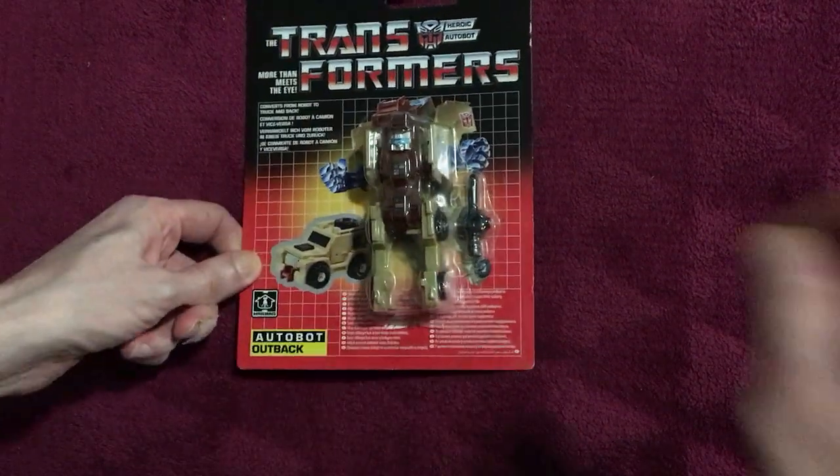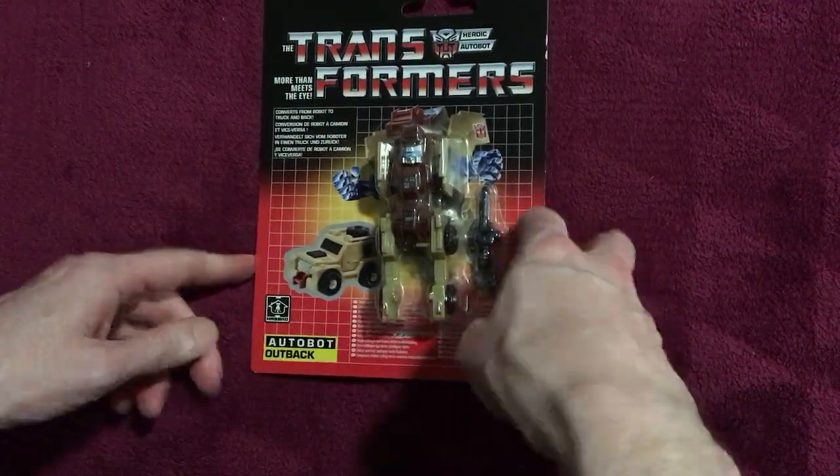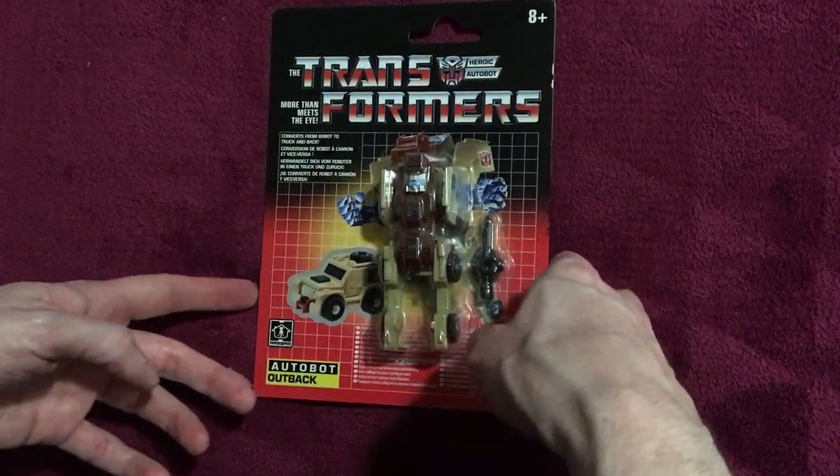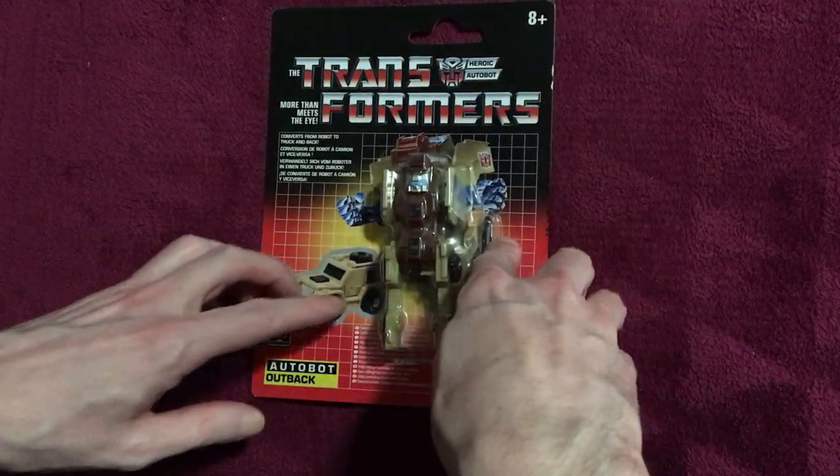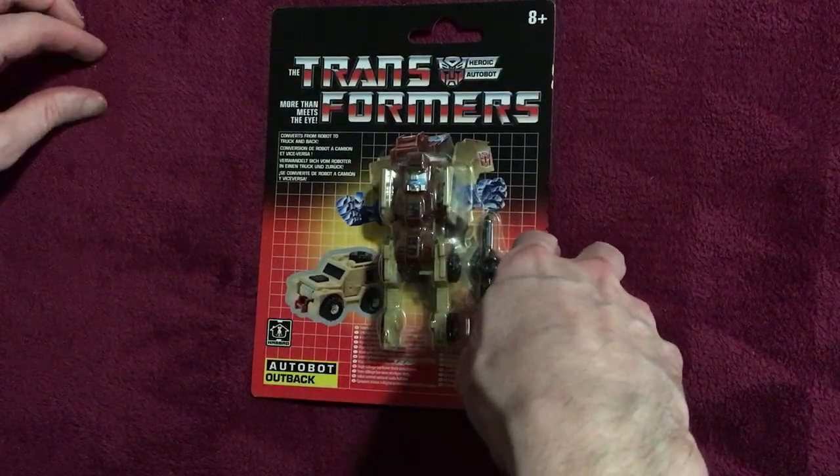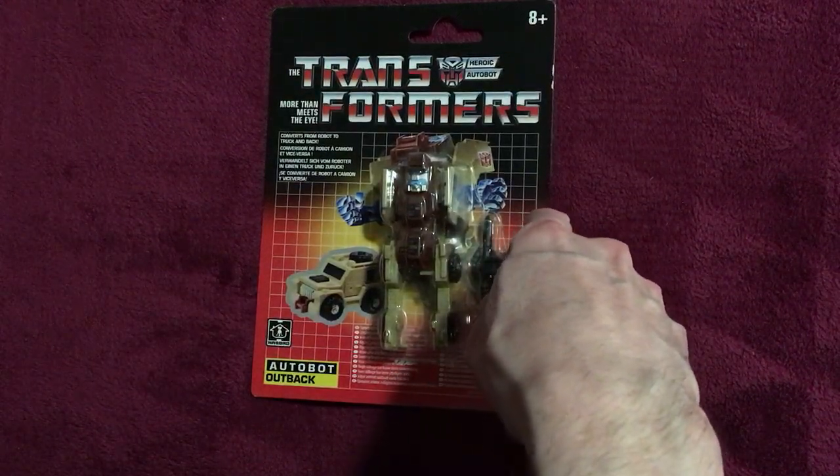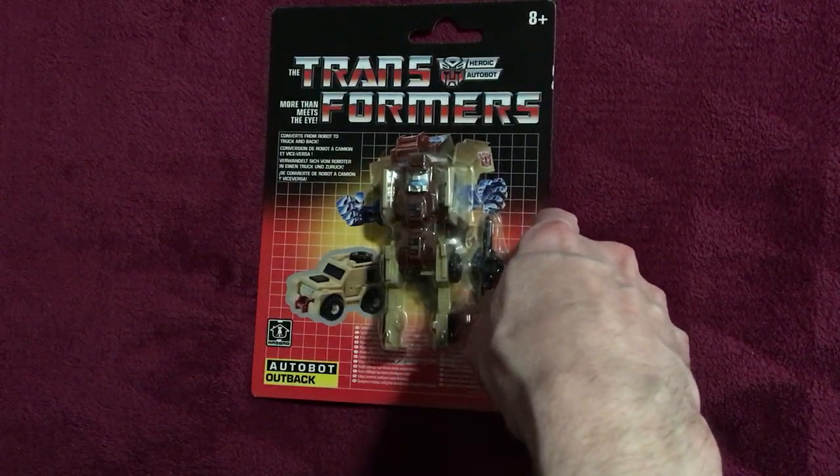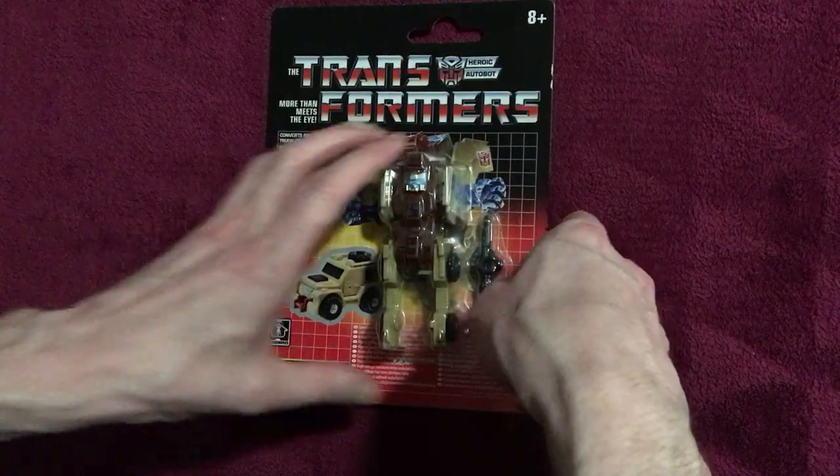One of the things about Outback is he's the only mini car who actually has an accessory. He actually has a gun, and I didn't know that when I bought it back in the day from a friend. So all these years he's never had a gun, and I always wondered if the gun would fit with Brawn as well.